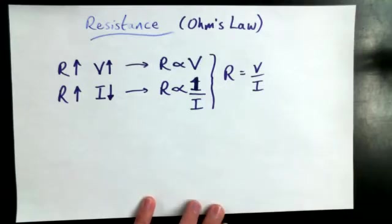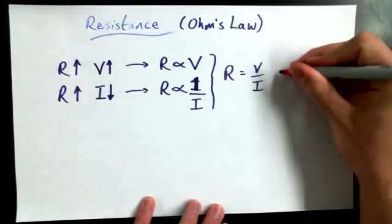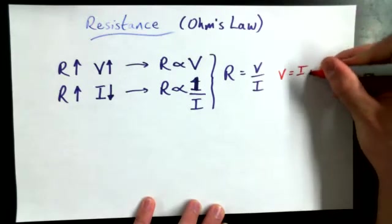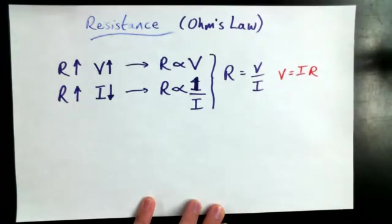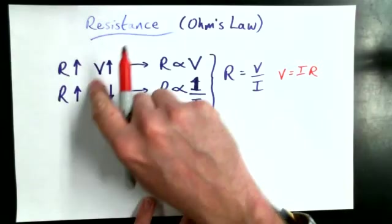And commonly, the way a grade 9 teacher will write it is V equals I times R. Not R equals V over I. But R equals V over I is a nice way to talk about it in terms of the real concept behind what's happening.